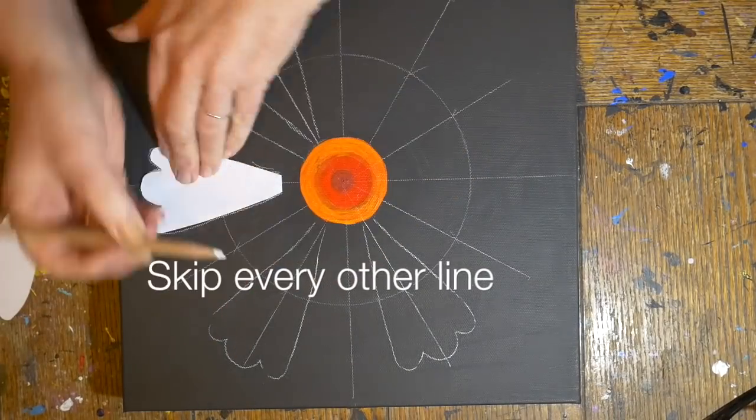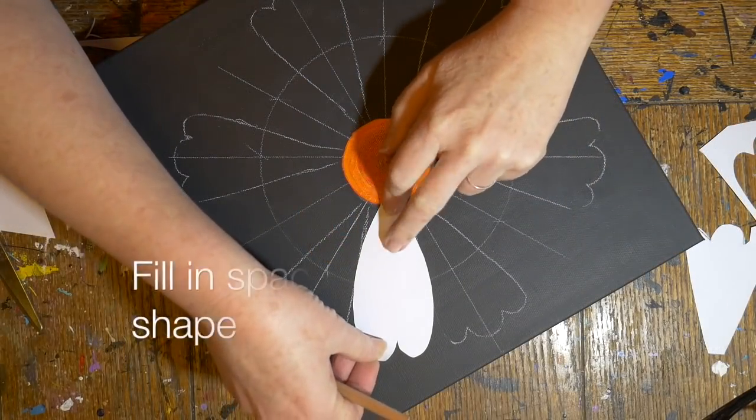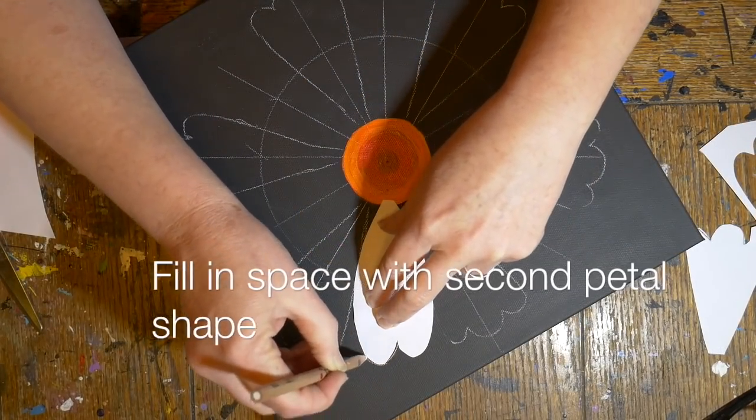So I'm gonna trace the first petal shape here and I'm gonna skip a line and then trace it again, do that all the way around.